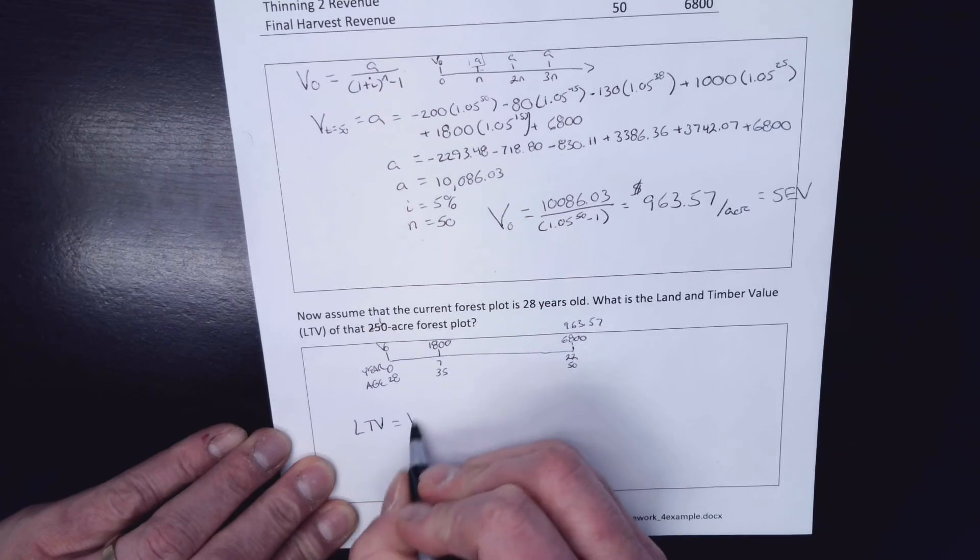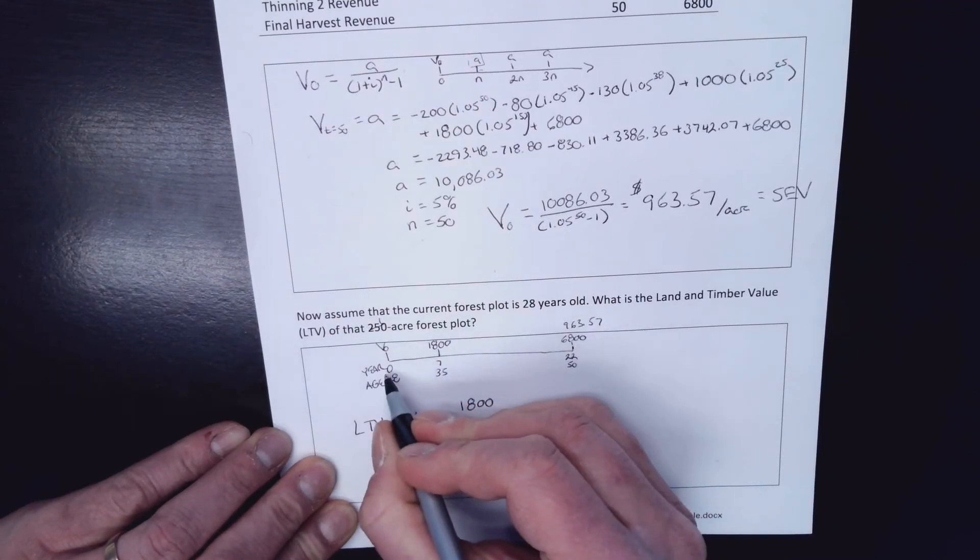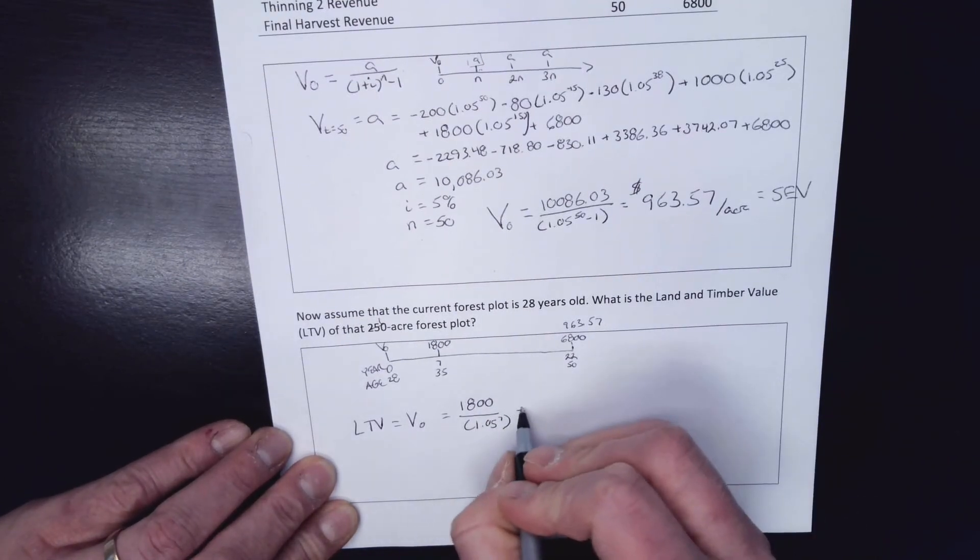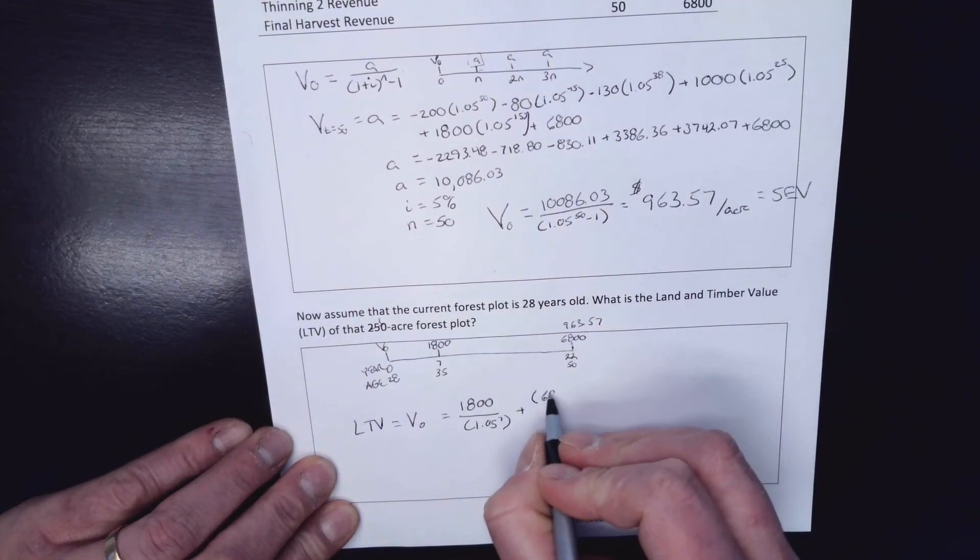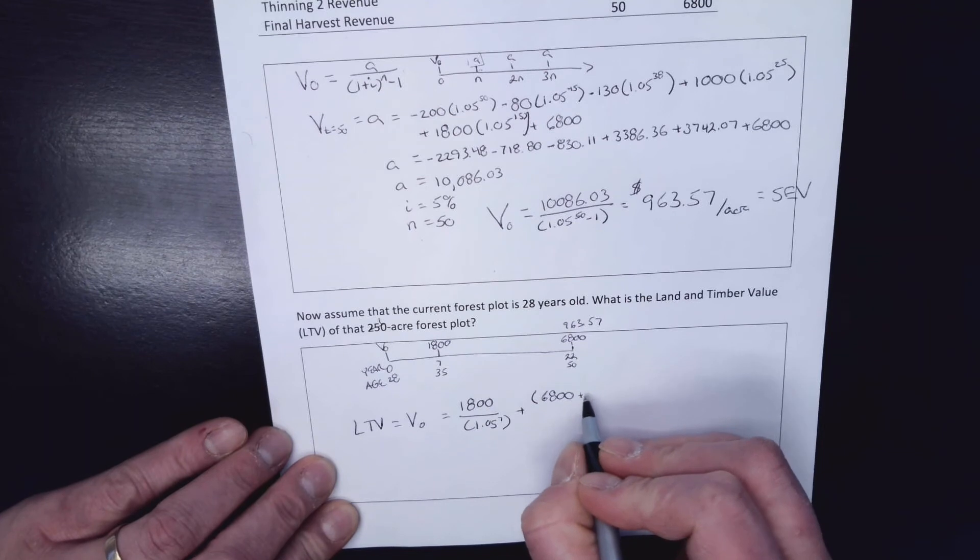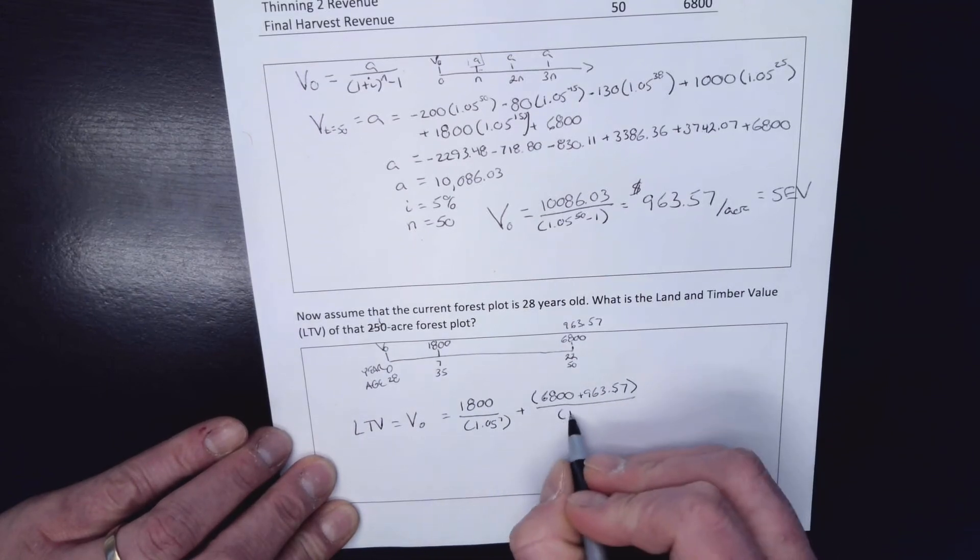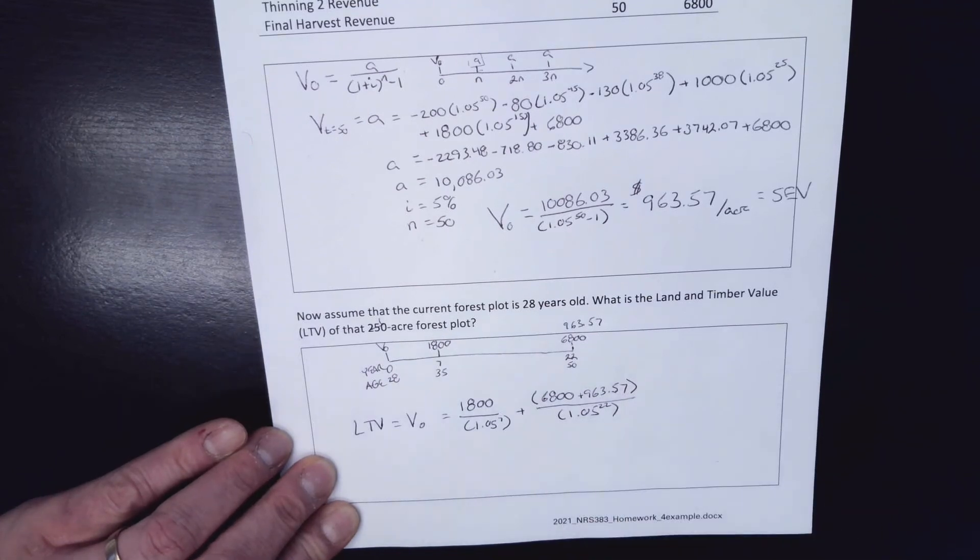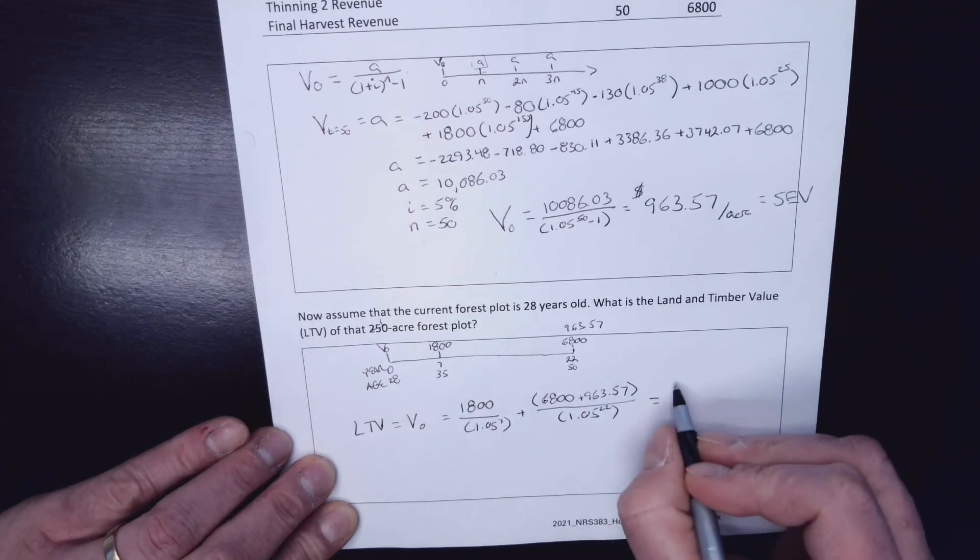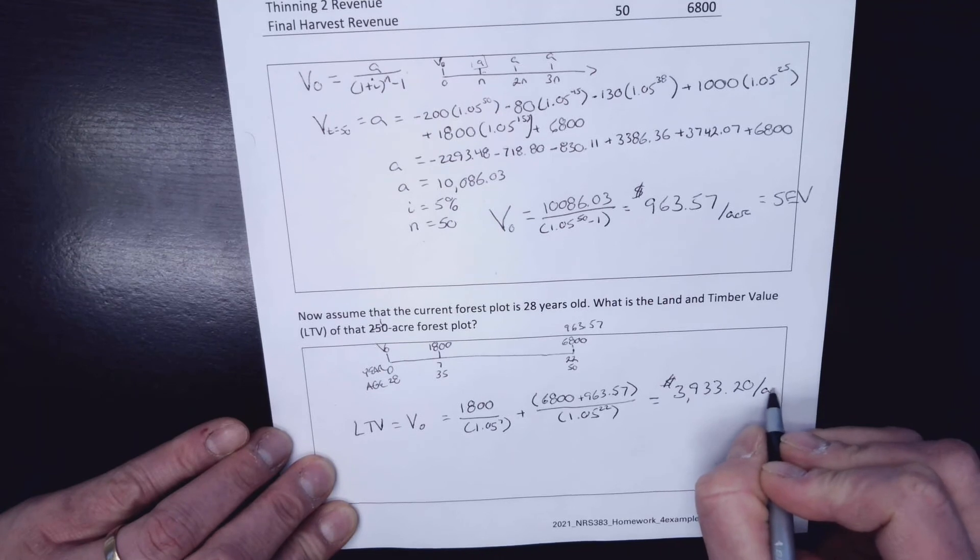So my land and timber value or this V₀ for this is going to be $1,800. This one here, I have to discount it back seven years. 1.05 to the seven. Okay. And I'm going to add on to that $6,800 that I get here. But I can, because they're in the same year, add all future costs and revenues, $963.57. And I take that back in time, 1.05 to 22. So slide that back, add these together because you're in the same year, slide them back. And my land and timber value is $3933.20 per acre. So we're just going to play with one acre right now.